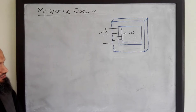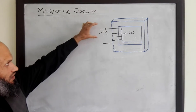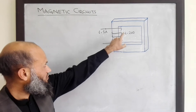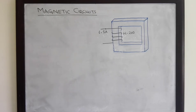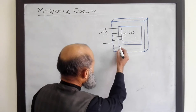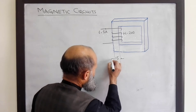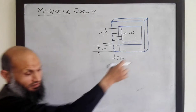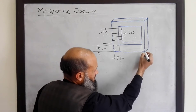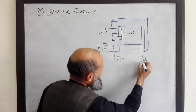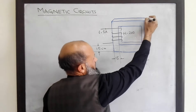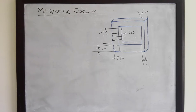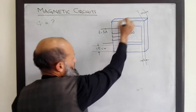We have a magnetic circuit that we want to analyze. It consists of a rectangular core on which a current-carrying conductor is wound. The current flowing in this conductor is 1 ampere, and the number of turns is 200. The thickness of one leg is 15 centimeters, this thickness is also 15 centimeters, and this leg is slightly thinner at 10 centimeters. The depth of the core is also 10 centimeters. We want to determine the flux flowing in this magnetic circuit.